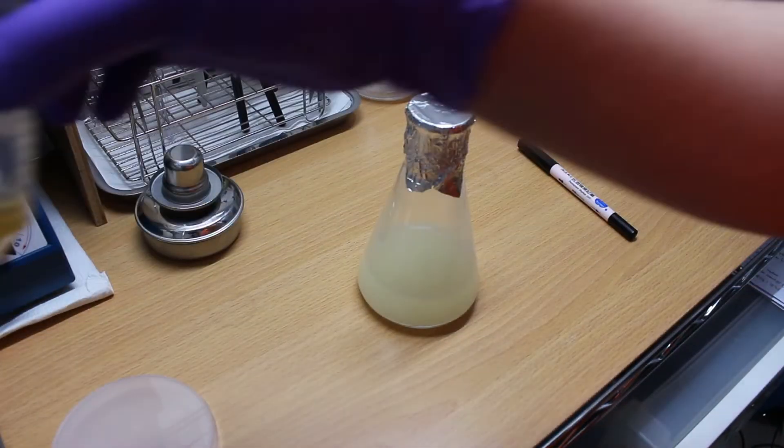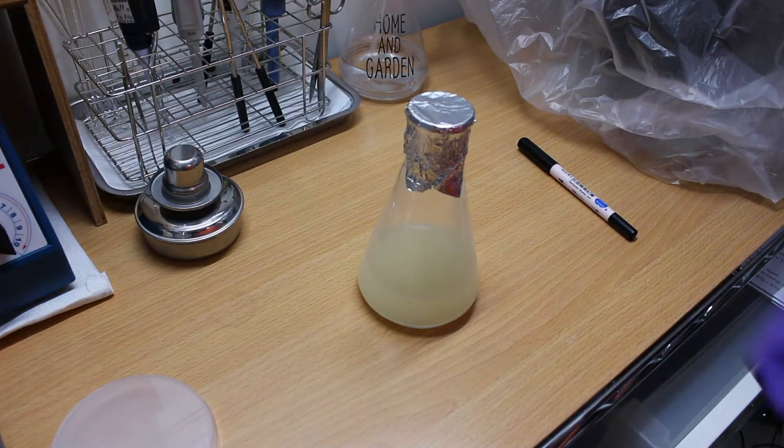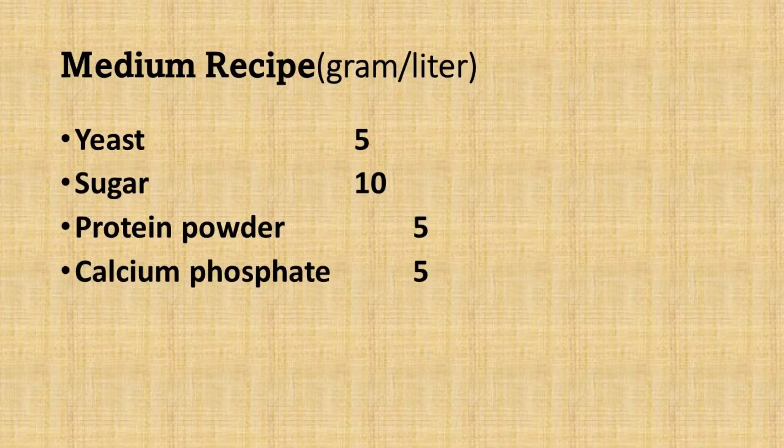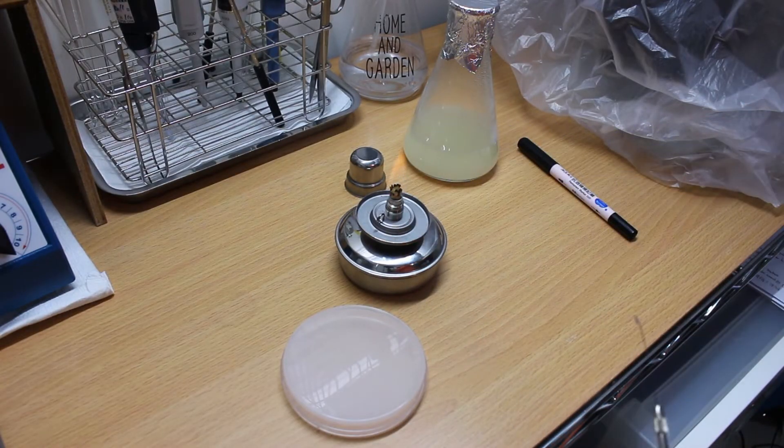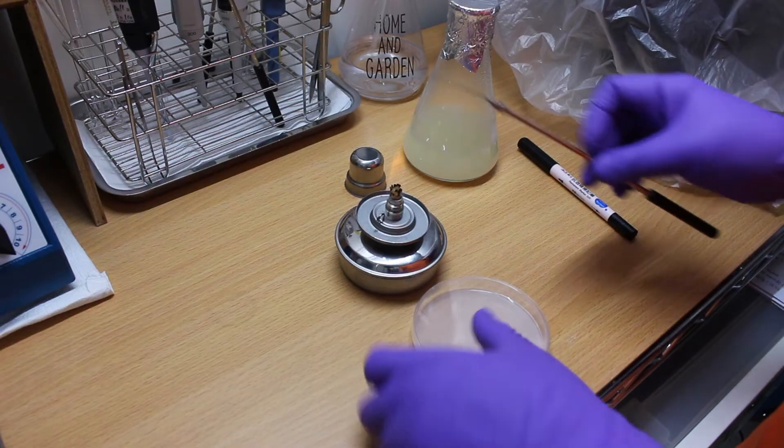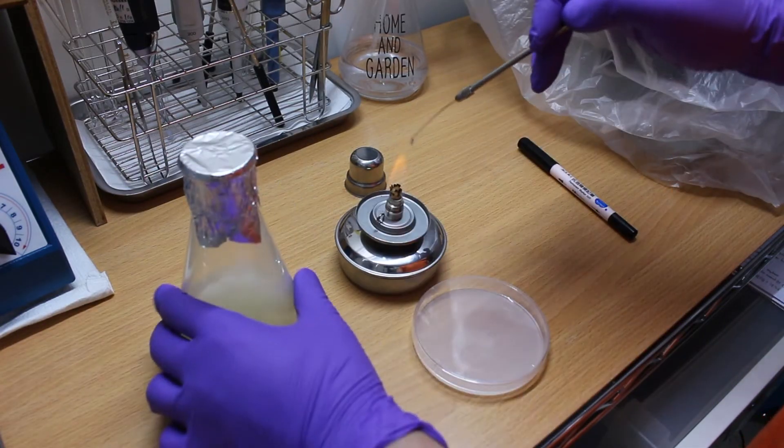The formula for this culture medium I'm using is here. A mixture of yeast, sugar, protein powder, and calcium phosphate. I suggest checking the culture every time to make sure it's PSB to avoid contamination.